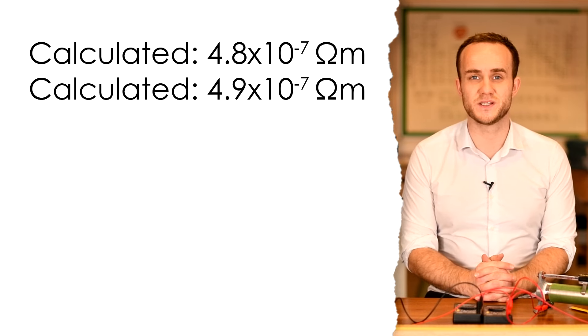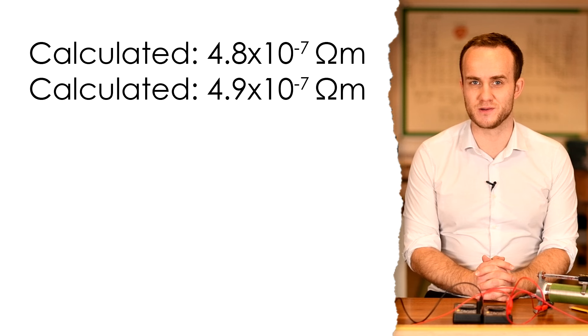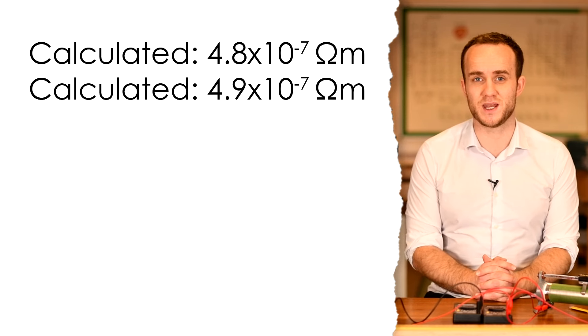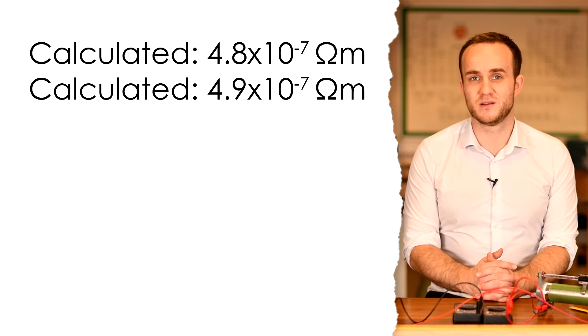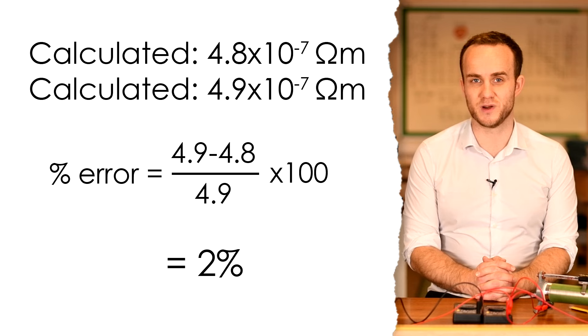Now the accepted value for the resistivity of Constantin is 4.9 times 10 to the minus 7 ohm meters, and so we were very very close. We can find the percentage error in our value by taking the difference. So that's just going to be 0.1 divided by the original 4.9 and times by 100. That's only a percentage error of 2%.